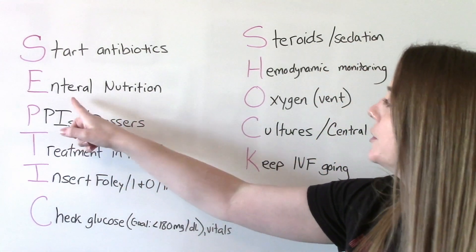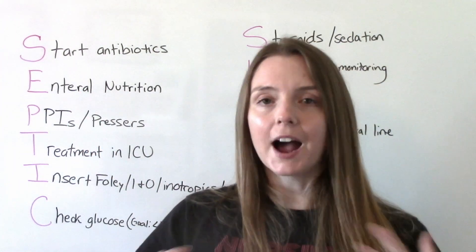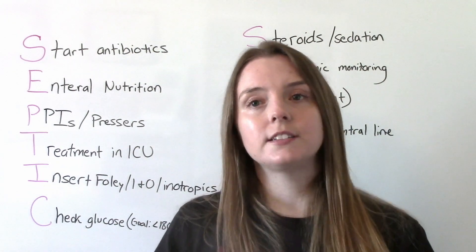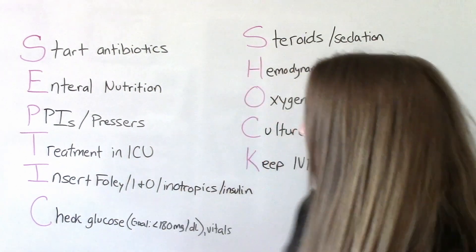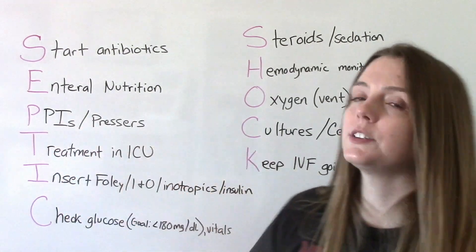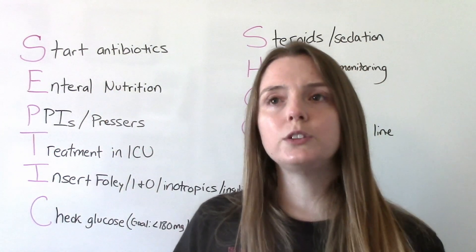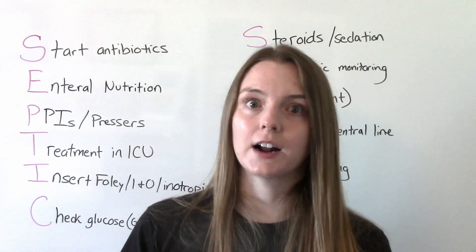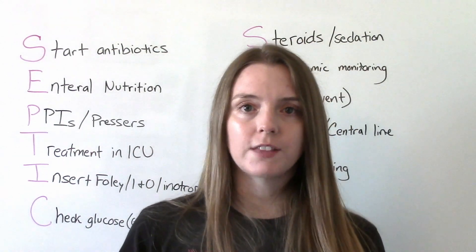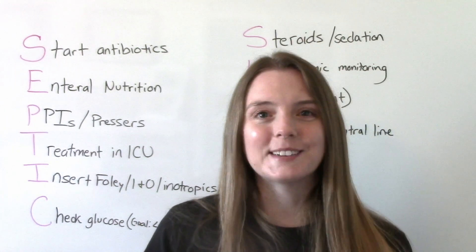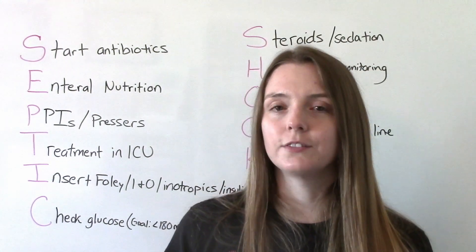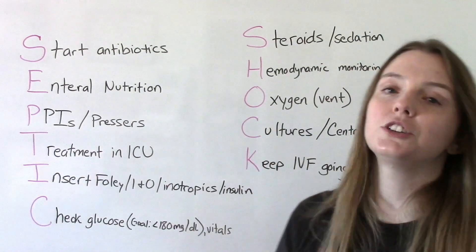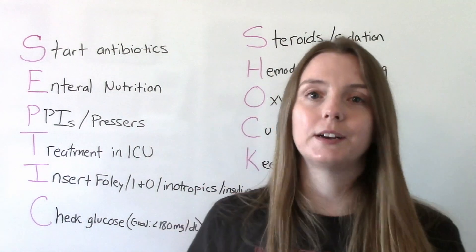E is for enteral nutrition — the body is under a lot of stress, and giving enteral nutrition can decrease the stress the GI system is under. P is for medications: we might want to start them on PPIs to reduce the risk of a gastric ulcer or bleed from being in septic shock. Also pressors — vasopressive medications — because they are hypotensive. These medications cause vasoconstriction, which helps increase the blood pressure.